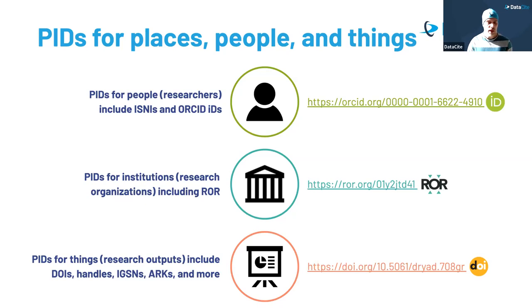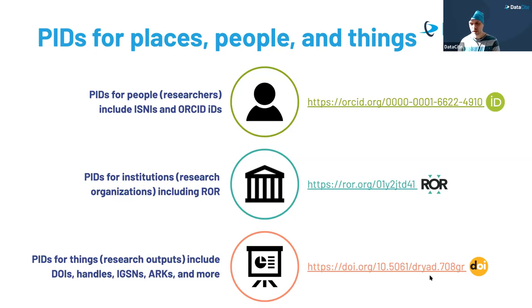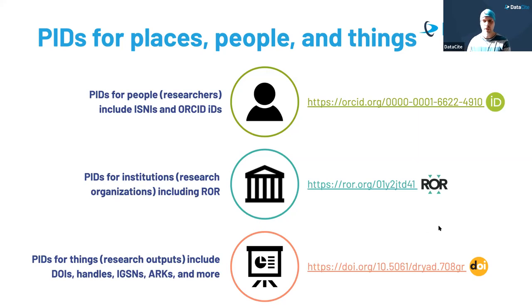PIDs for research outputs include DOIs from repositories — here is an example of a resolvable DOI from the Dryad repository. How do PIDs work? It is basically a matter of service — somebody at your institution, within a repository or research information system, must be committed to providing researchers with open scholarly infrastructures and the accompanying metadata that belongs to each research output.